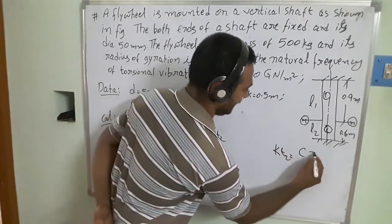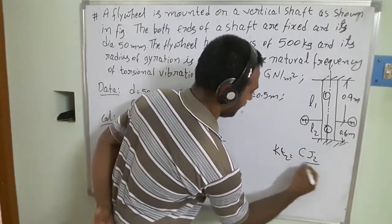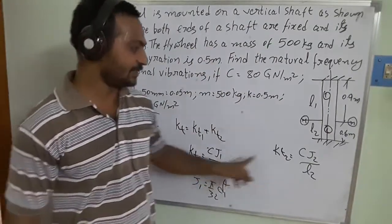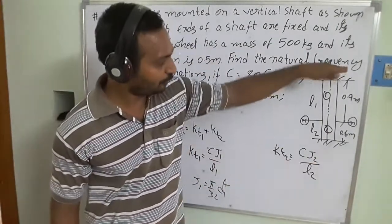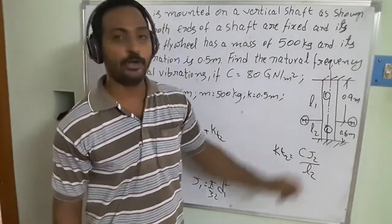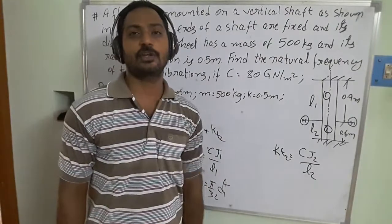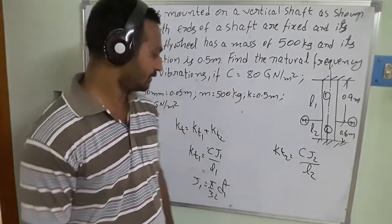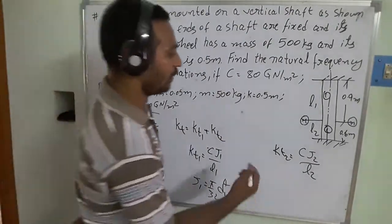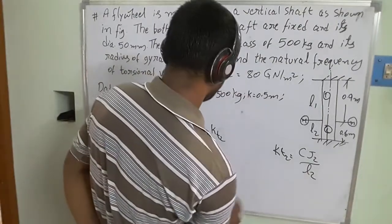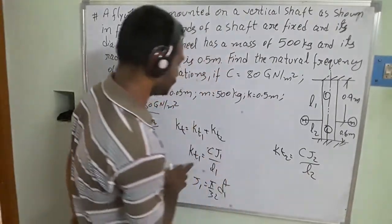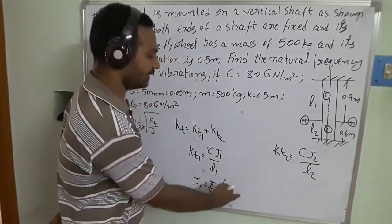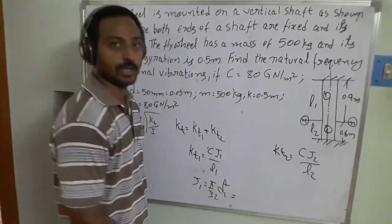In this case J1 equals J2 because we have a uniform circular cross-section throughout both ends of the shaft. Once we substitute kt1 and kt2 we can obtain the numerical values.